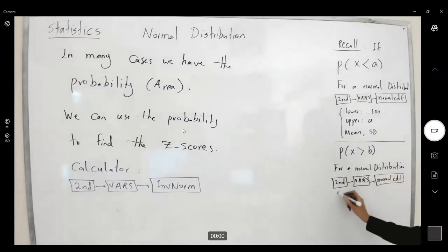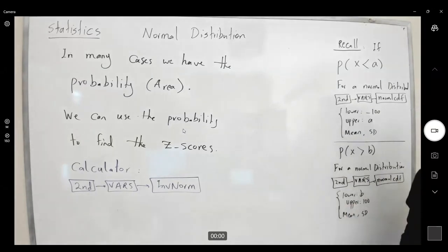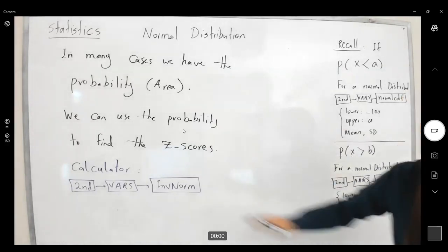And your lower limit is B. Your upper limit is a large number, like 100, 1000. Then the mean and standard deviation. In between is in between. You have your lower limit, you have your upper limit.